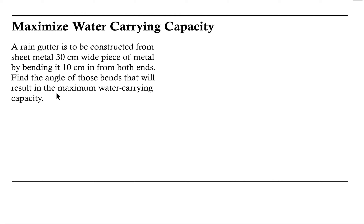Let's start by drawing a picture and understanding what's going on in this context. We have a 30 centimeter piece of metal. We're going to go in 10 centimeters from each end, so each of these segments is 10 centimeters, and we're going to bend upward the left and right 10 centimeters through some angle.